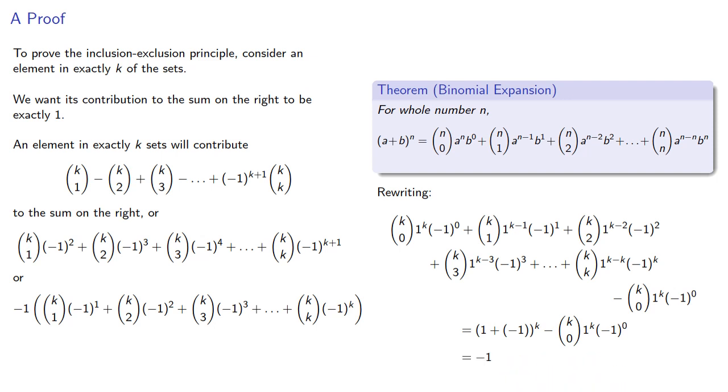And remember, these were the terms inside the parentheses. So all those terms inside the parentheses collapse down to negative 1. And so an element in exactly k of the set will contribute exactly 1 to the sum on the right. And that's our proof.